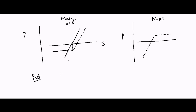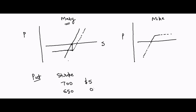The premium for a put option depends on both the strike price and the expiry date. If the strike price is $700, it's more likely the stock goes below $700, so the premium might be $5. But if the strike price is $650, it's less likely to go that low, so the premium drops to maybe 50 cents.